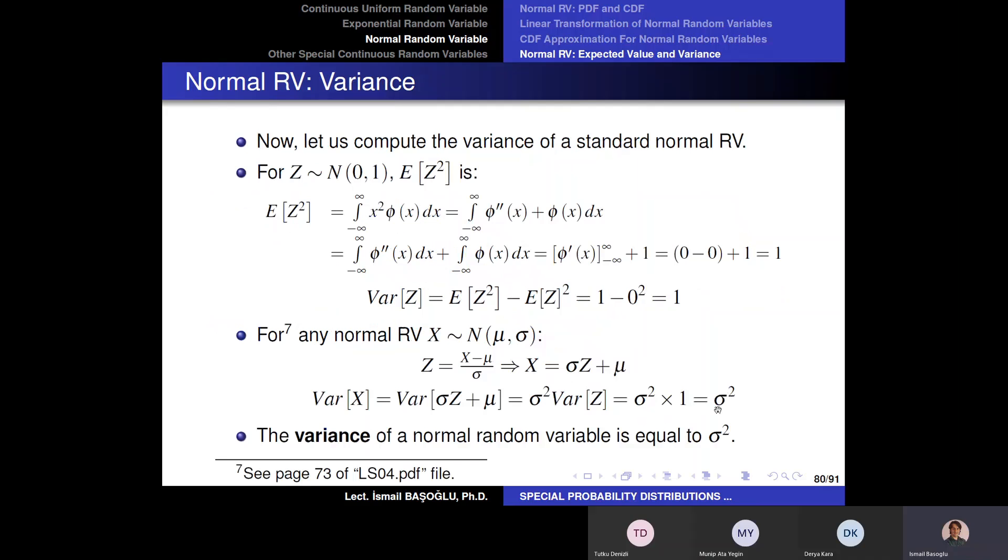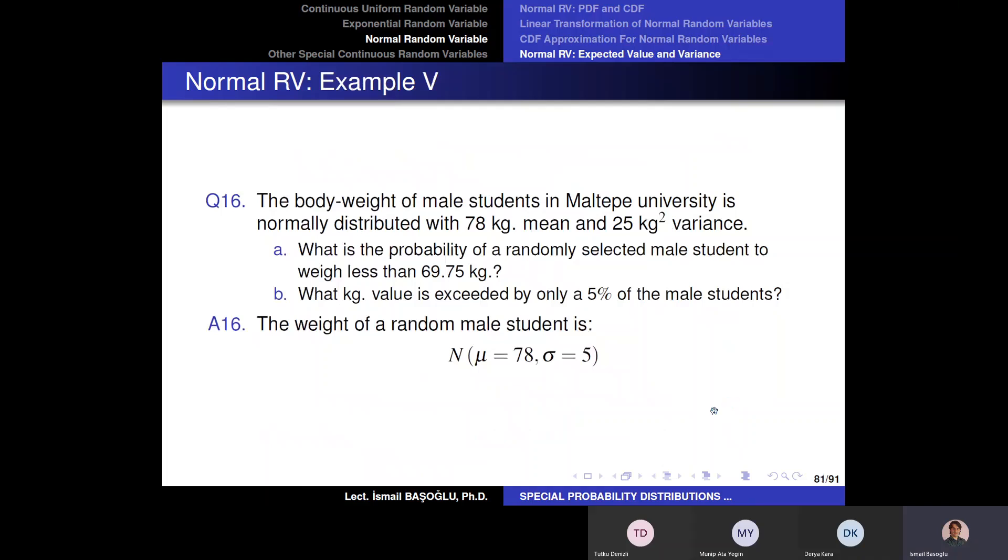Remember? The variance is equal to sigma square. This means scale parameter must be equal to 5. So please be very careful about this.